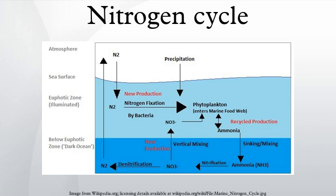Decreases in biodiversity can also result if higher nitrogen availability increases nitrogen-demanding grasses, causing a degradation of nitrogen-poor, species-diverse heathlands.